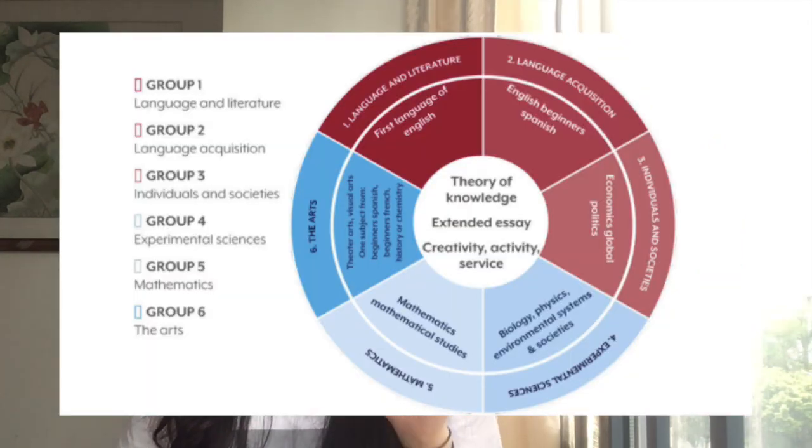First, we're going to talk about the rules for choosing IB subjects. In IB, they split their subjects into six different groups, and you have to choose one subject from each group. However, you cannot choose a subject in group six and choose another subject in groups one, two, three, or four — and not five because you cannot do two different mathematics courses.